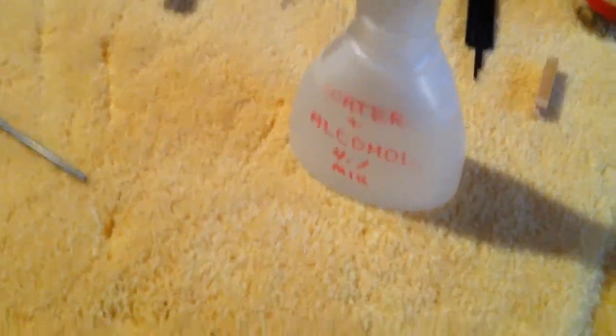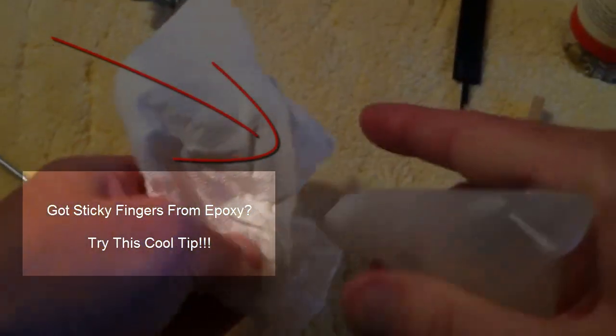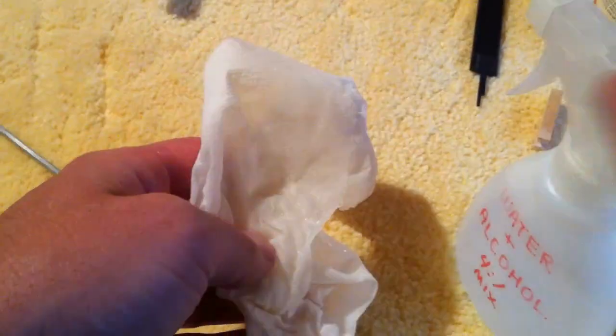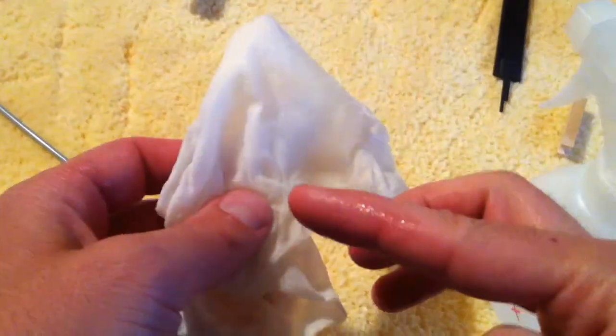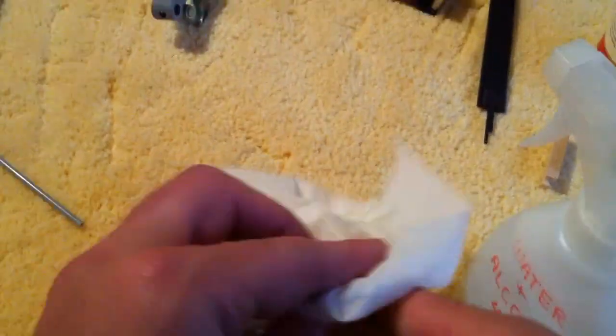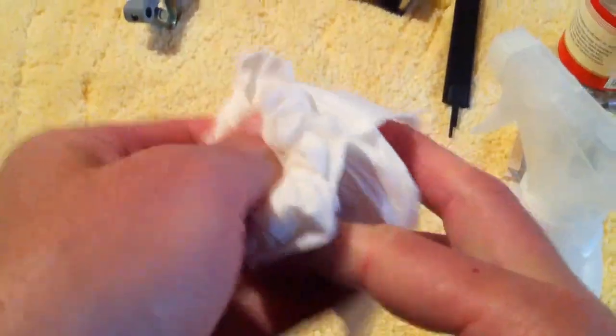While it's curing, I have a little extra tip here. I use a little water and alcohol mixture. Spray it on a paper towel or rag, and if you have any excess epoxy like that on my finger there, just use a little of that alcohol and water on the epoxy and it works really nicely to take it off.